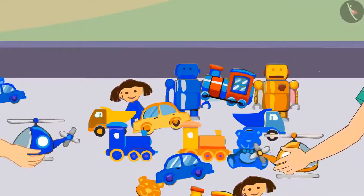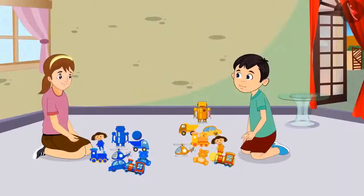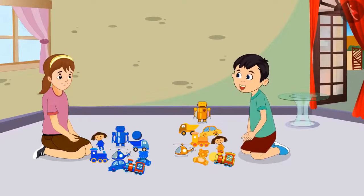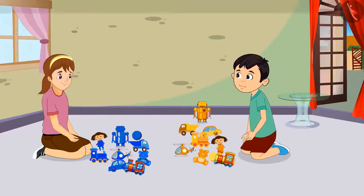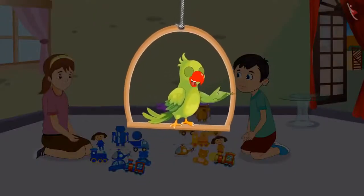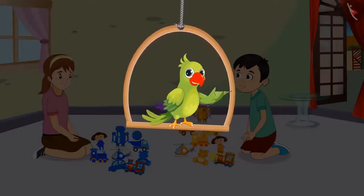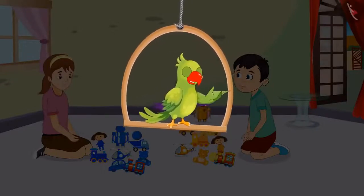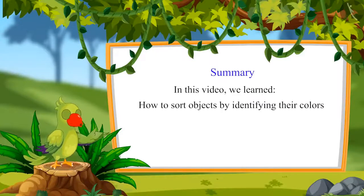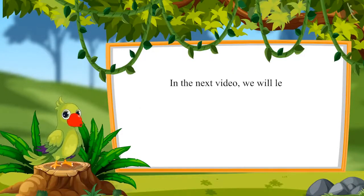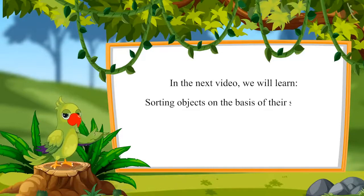Chotu and Aarti sorted their toys and Chotu said, 'Aarti, it was so quick — we identified the colors of our toys and could easily separate them.' So children, did you see how to identify the colors of objects and sort them accordingly? That was all for today. In this video, we learned how to sort objects by identifying their colors. In the next video, we will learn sorting objects on the basis of shape. Till then, bye children.